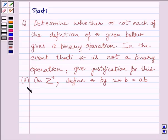Second part is, on Z plus, where Z plus is the set of all positive integers, define star by A star B equals AB.